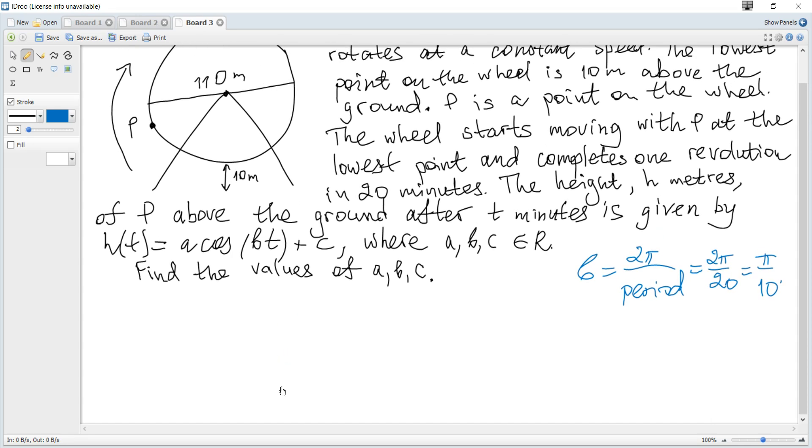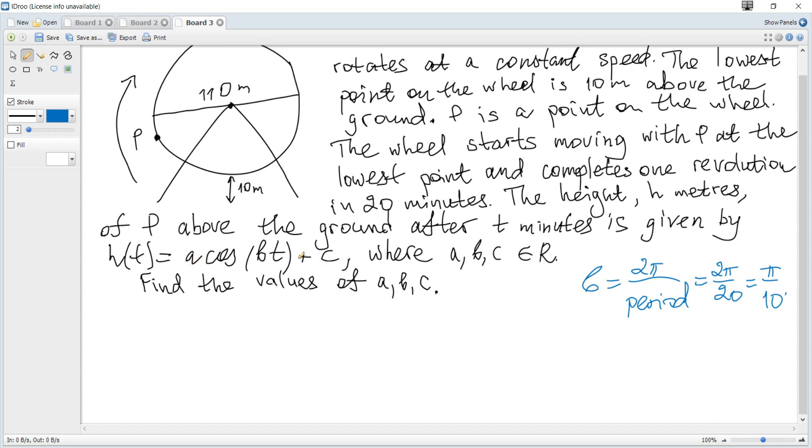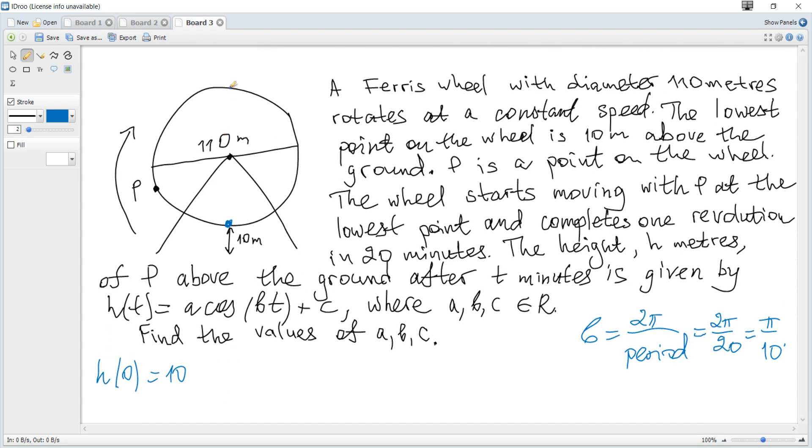To find A and C, we can substitute coordinates of known points to get equations and solve for the required parameters. Since we need two unknowns, we need two points. Consider the initial point: H(0) = 10 because it starts at the lowest point. For the highest point, since one revolution is 20 minutes, it reaches the top at 10 minutes, so H(10) = 120.